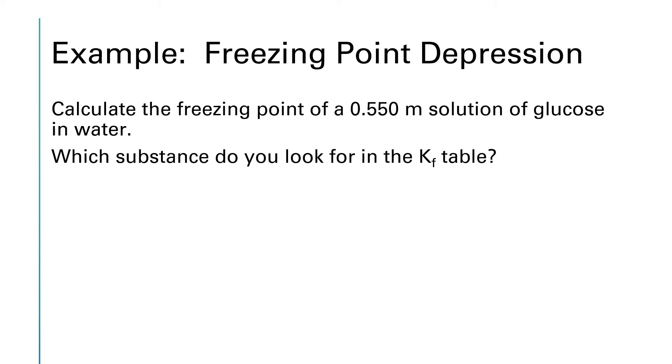This example problem asks us to calculate the freezing point of a 0.550 molal solution of glucose and water. Before we jump into our calculations we're going to need a value for i and a value for k. So let's start by figuring out which substance we need to look for in the Kf table because we have two substances here: one of them is glucose and one of them is water.